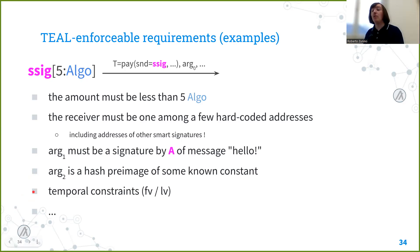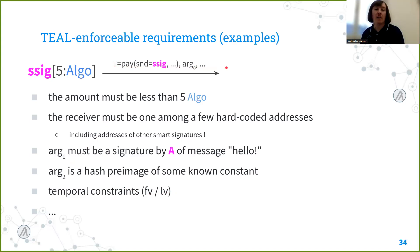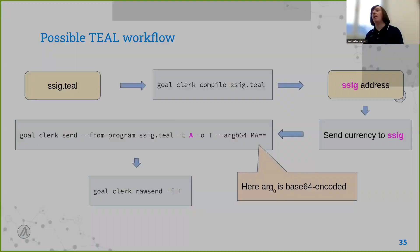Teal code can also access the transaction's first-valid and last-valid fields and require that, for instance, first-valid is at least two months from now. In this way you essentially create a smart signature from which you cannot take algos until that time — requiring the transaction to be appended to the blockchain only in the future. This is just a small list of possible checks, but as you can see the mechanism is very versatile.